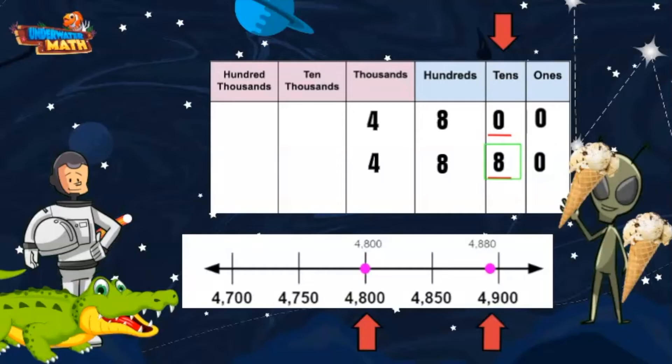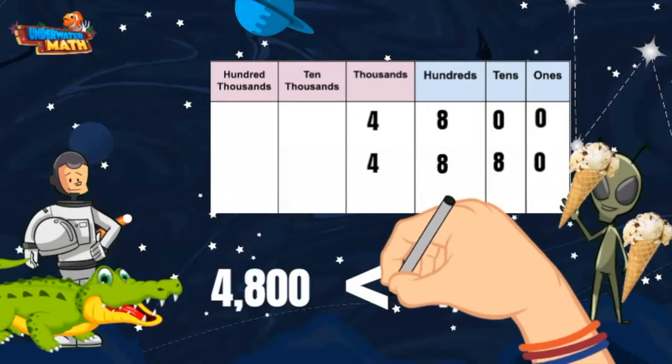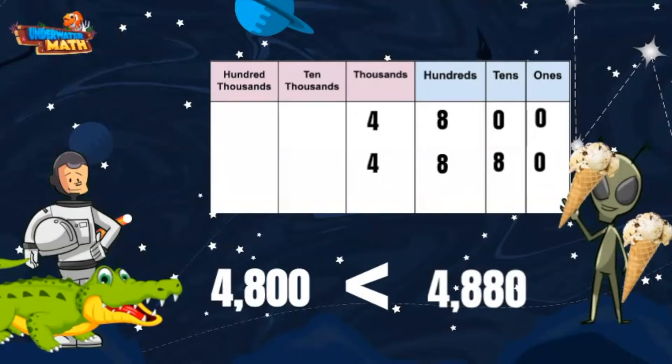Now let's set it up so that we can use our comparison symbol. We want the comparison symbol to open up to the larger number because, as we know, the alligator always wants to eat the larger number.